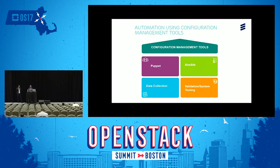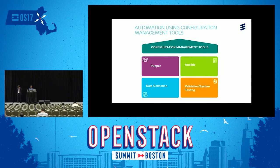To achieve known state, we have to choose the right configuration management tools. Here we specify some industry-standard options. The first is Puppet — an open-source tool that is very reliable and scalable. Another tool we can use is Ansible playbooks, which are quite well-known in the OpenStack industry. Ansible is also very scalable, easy to operate, grow, and upgrade.